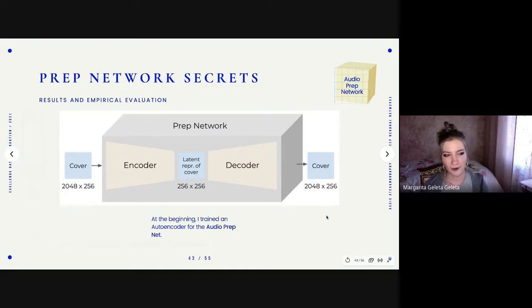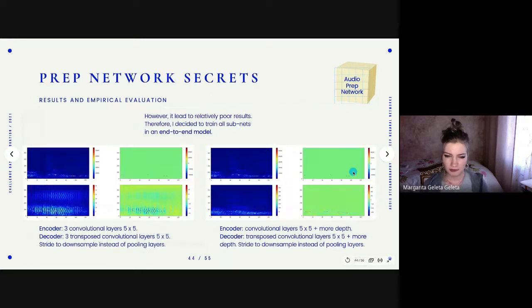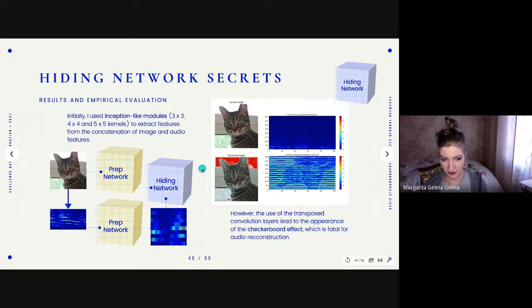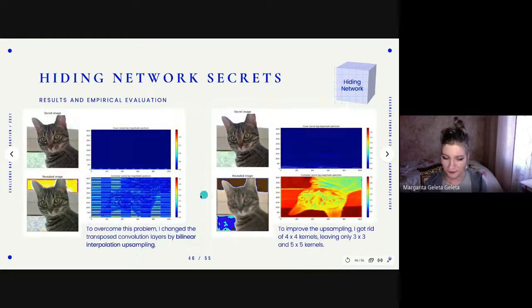At the beginning, I thought of training a separate audio encoder. But the results were pretty poor. And that's why I decided to train all the subnets in an end-to-end model, just to plug everything and train it all together. And that's what I have done. Everything was based on inception-like modules. And when I used the transposed convolutional layers, it led to the appearance of checkerboard effect, which is quite fatal for audio reconstruction. That's why later I have switched to bilinear interpolation upsampling. And just to make it all easier, I got rid of the 4x4 kernels. So I left all the inception modules with 3x3 and 5x5, and bilinear interpolation upsampling. Also, I had to keep track of the coefficient values, because it's important for reconstruction. And I have played with different activation functions. And the best which worked was the leaky ReLU.